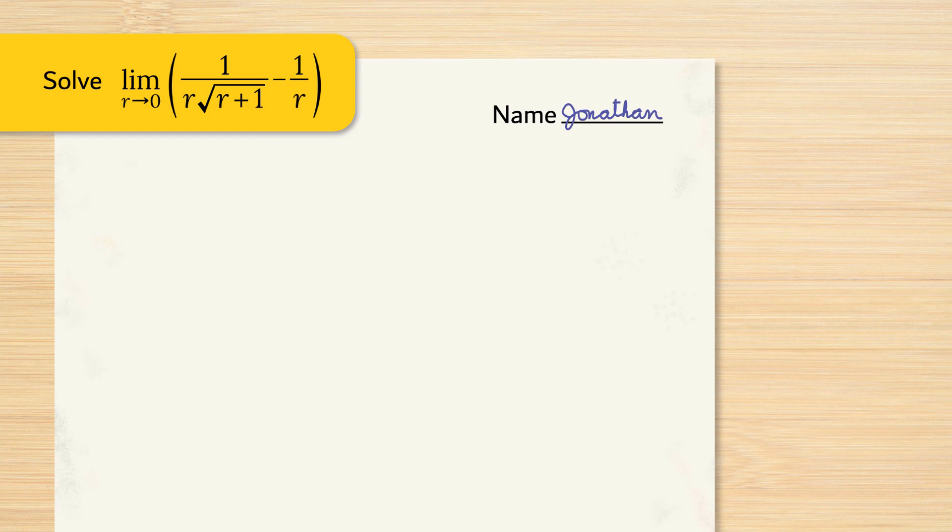This is a tougher example. We have fractions and also a square root. The first thing we're going to do is get a common denominator so that we can combine these two fractions together.